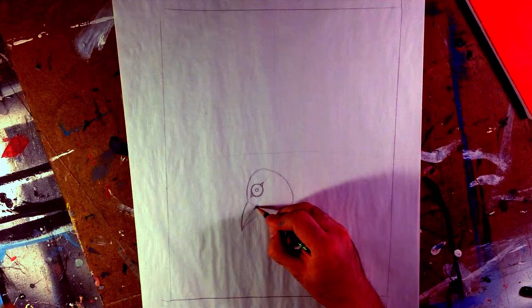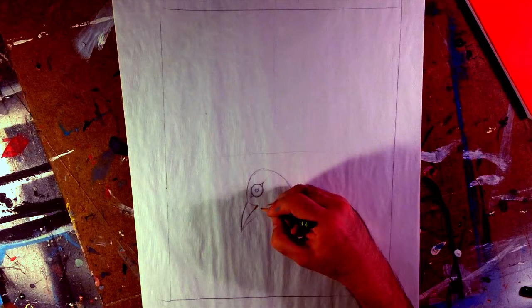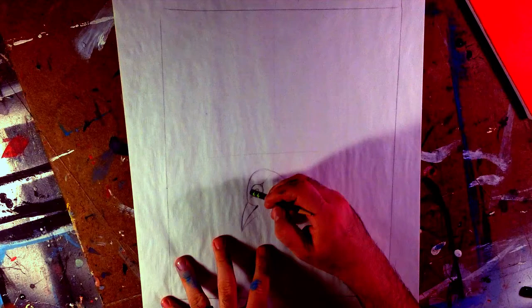I forgot to account for the extra feathered part of the top of the head, so I'm erasing the line to make the beak larger to meet with the head. This is exactly why I like to pre-sketch on tracing paper. You can correct as much as you want.